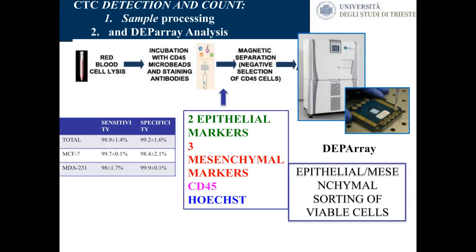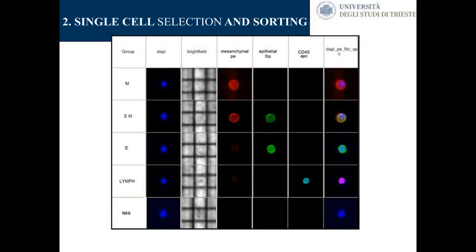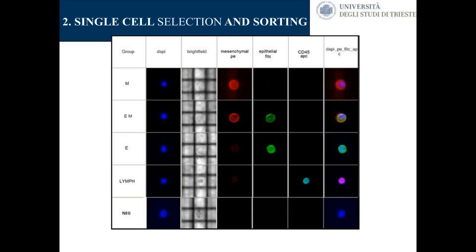For each cell, we analyzed whether it was mesenchymal — appearing red — epithelial-mesenchymal transition showing both red and green, epithelial only showing green fluorescence, lymphocytes as smaller cells with different fluorescence, and blue only indicating impurity. Having classified cells this way, we came to clinical validation of the method by comparing with CellSearch, associating clinical pathological features with CTC number, distribution, population, and correlation between CTC gene and special profile.